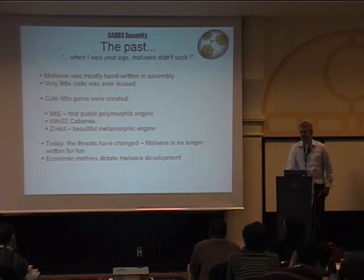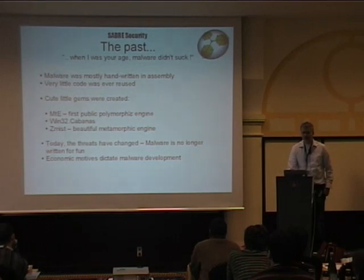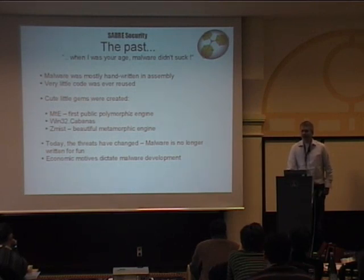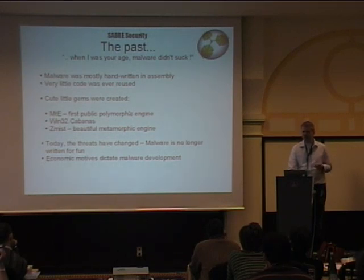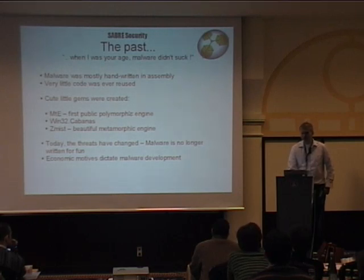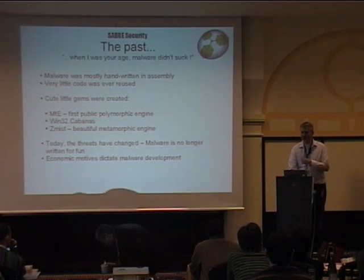Then you had something like ZMIST, which is probably the best metamorphic engine that has ever been publicly released into the wild — a full disassembler written in assembly that would take an executable, disassemble it, build all cross references, then infect and mutate the entire executable. The reason was that AV folks started looking for statistical patterns in binaries. When they noticed statistically deviant code at the end, they'd flag an infection. So ZMIST would morph the whole executable, making everything look like garbage, not just the polymorphic stuff at the end.